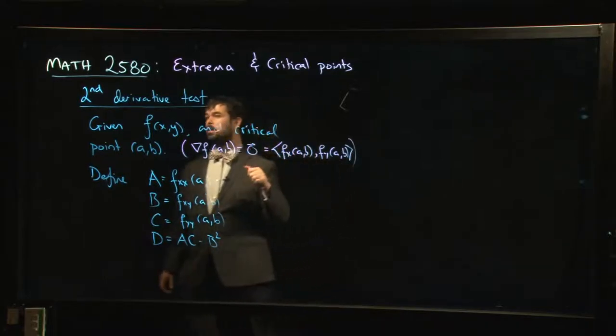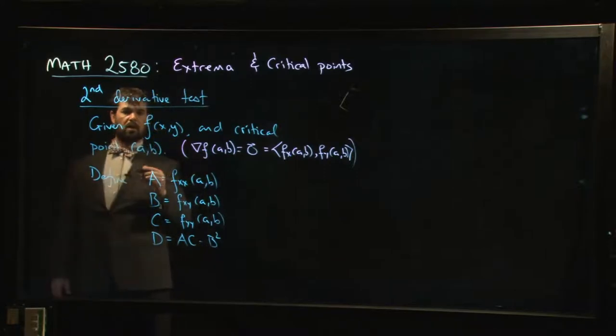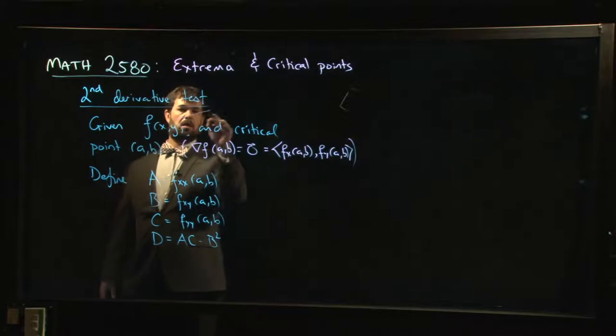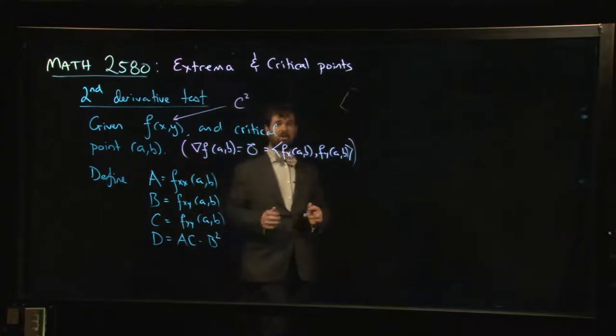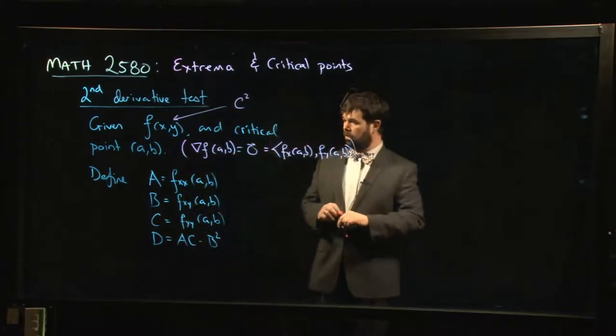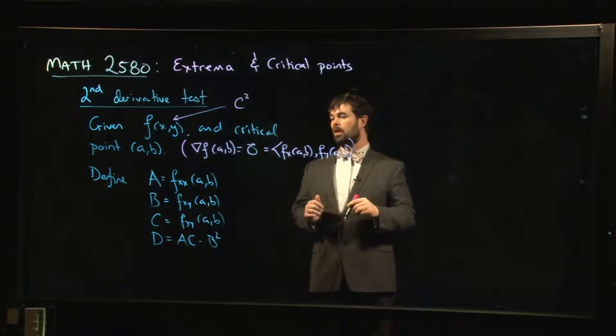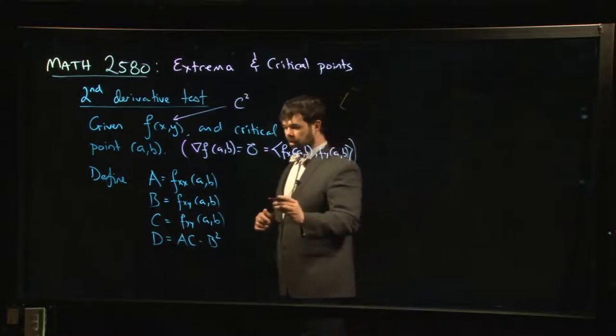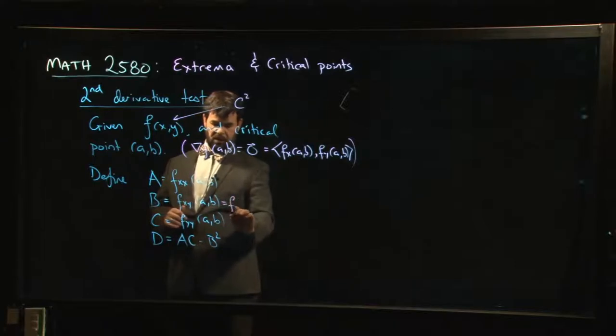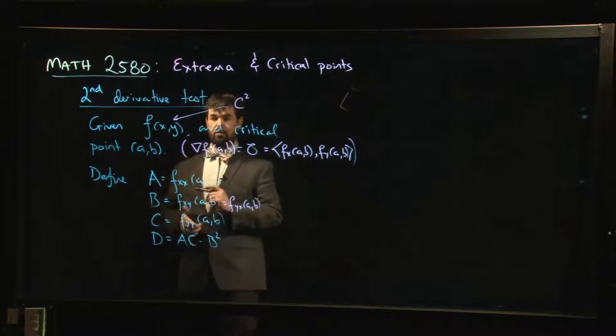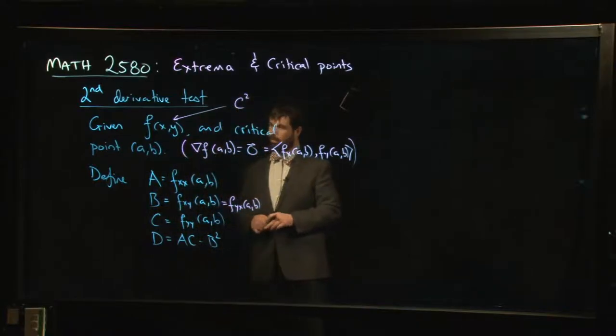Now there's one condition that we need for this second derivative test to work. We need this function here to be a C2 function. Remember that means the function has to have continuous second-order partial derivatives. And one of the things that does for you is that Clairaut's theorem is in effect and we know that the two mixed partial derivatives are equal.